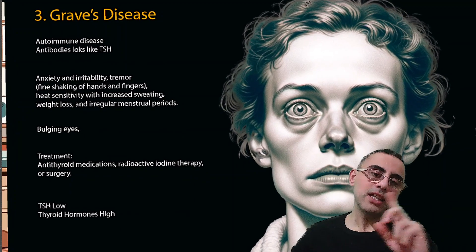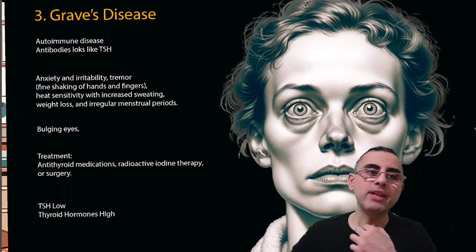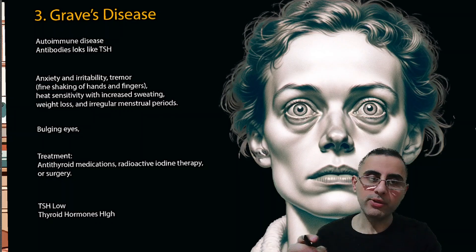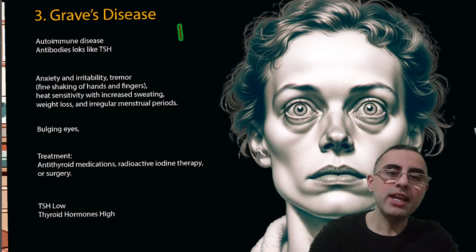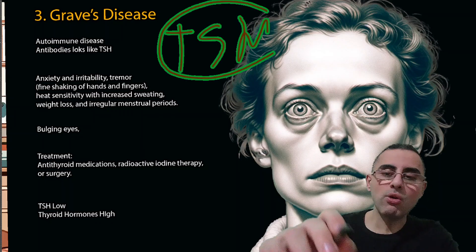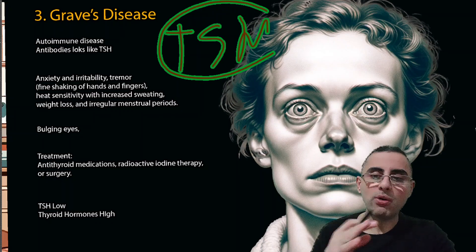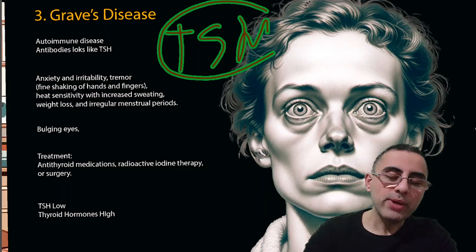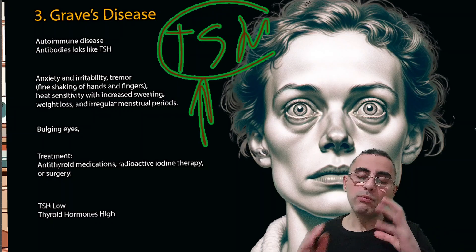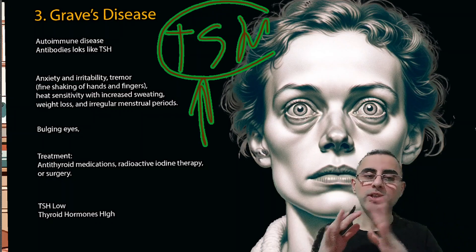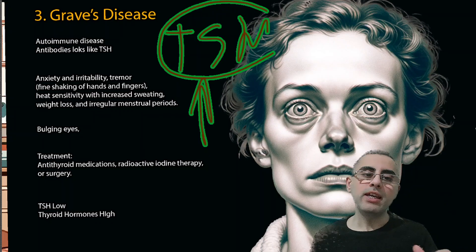The third most common cause of goiter is Graves' disease, also an autoimmune disease but with the opposite effect. While Hashimoto's disease destroys the thyroid gland, Graves' disease stimulates it, because the body produces antibodies that resemble TSH. The thyroid gland is stimulated and releases more and more thyroid hormones, resulting in faster metabolism. The person appears anxious, irritable, and has tremor — shaking of the hands and fingers.